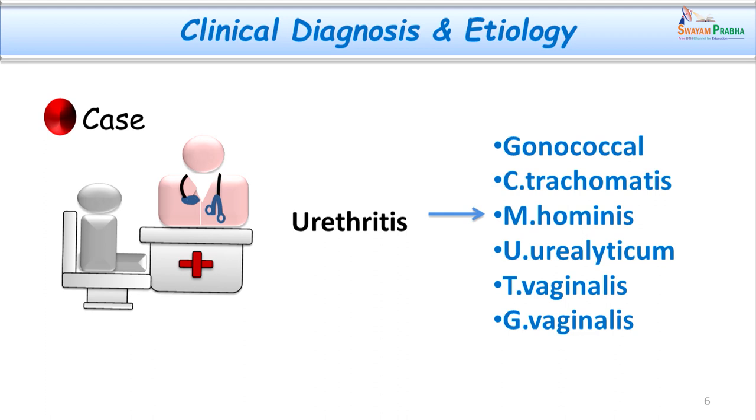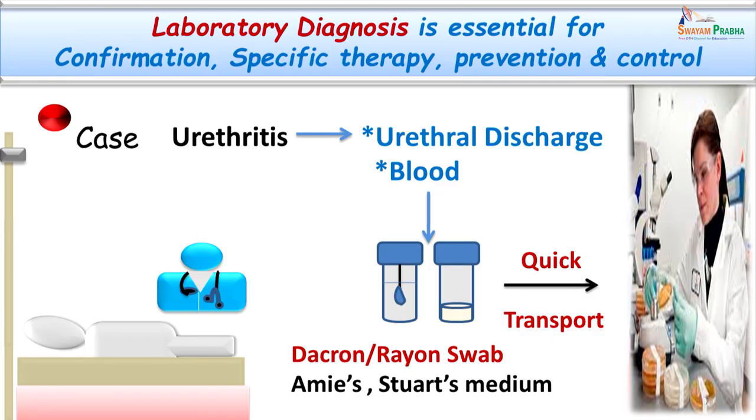The parasite Trichomonas vaginalis and the bacterium Gardnerella vaginalis can also lead to non-gonococcal urethritis. In this condition, it was important to go for laboratory diagnosis to confirm the clinical diagnosis and to establish the etiology, because bacteria, parasites, fungi, and others can be involved. It is important to diagnose and establish the etiology so that specific therapy, prevention, and control of the disease can be initiated.